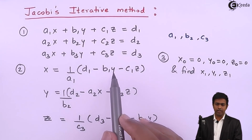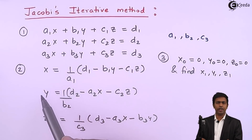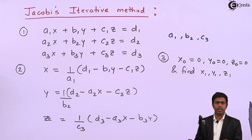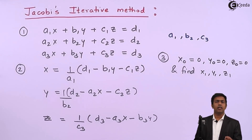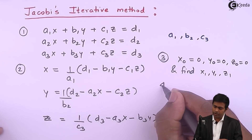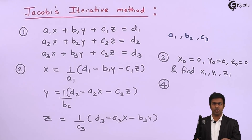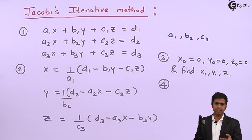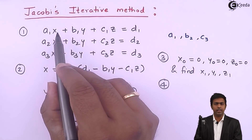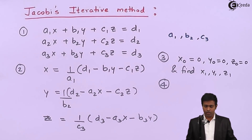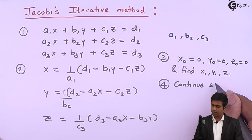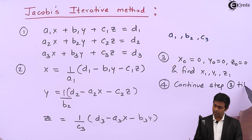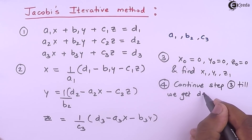Once we get the values of x1, y1, z1, we use them again in the same equations to find x2, y2, z2 — that is the second iteration. Then we take x2, y2, z2 into the same equations to get x3, y3, z3, and we continue this process until we reach the desired level of accuracy. We then stop and the values at that iteration are our final answers.